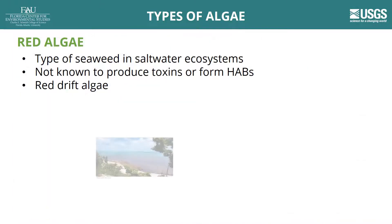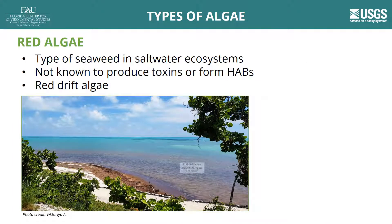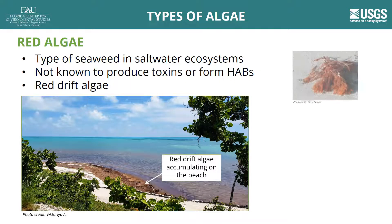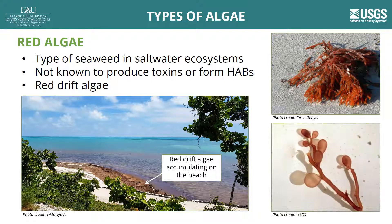Red algae include a type of seaweed which are only found in saltwater. Red algae are not known to produce toxins or form HABs, but overgrowth can still be problematic. A type of red algae called red drift algae can be especially problematic when it accumulates on beaches. Despite their similar names, red algae are not related to red tides.